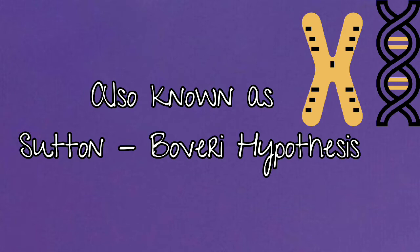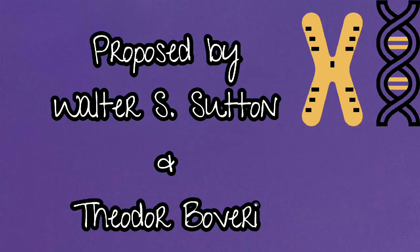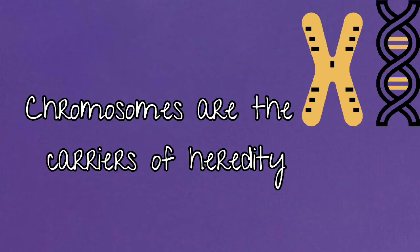In 1902, two investigators — Walter S. Sutton, an American geneticist, and Theodor Boveri, a German cytologist — independently suggested a hypothesis that genes are located on chromosomes. And in 1904, Walter S. Sutton and Theodor Boveri proposed the chromosome theory of heredity in their classic paper, 'The Chromosomes in Heredity.'